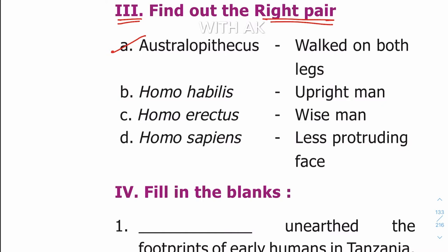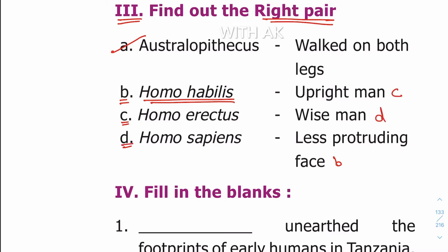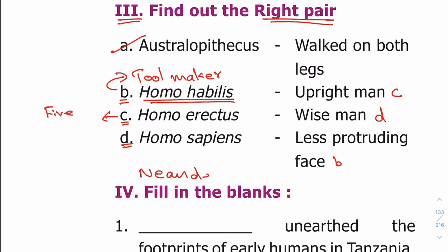Australopithecus walked on both legs. B: Homo habilis — less protruding face. C: Homo erectus — upright man. D: Homo sapiens — wise man. Some important points related to this evolution stage: Homo habilis is the first tool maker. Homo erectus had knowledge of fire. In this evolutionary stage, we also see the first burial practice.